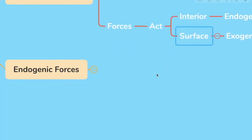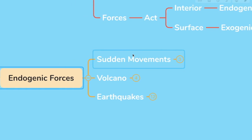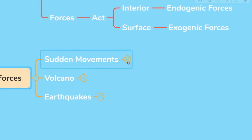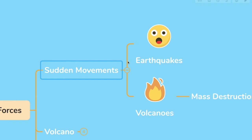What are endogenic forces? As I said, they are forces which act on the interior of the earth. Now, this is what happens. When the sudden movement occurs, it causes earthquake and volcanoes which leads to mass destruction.